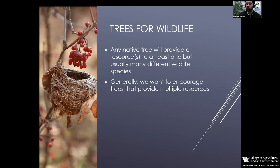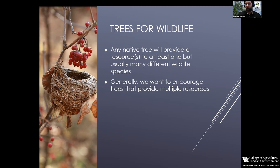Ideally, we want to encourage trees that can provide multiple resources. Pretty much every tree provides cover, so we want to encourage species that may also provide food to some wildlife group during the year, or trees that provide roosting habitat for bats. Best case scenario, you provide multiple things from one tree species.